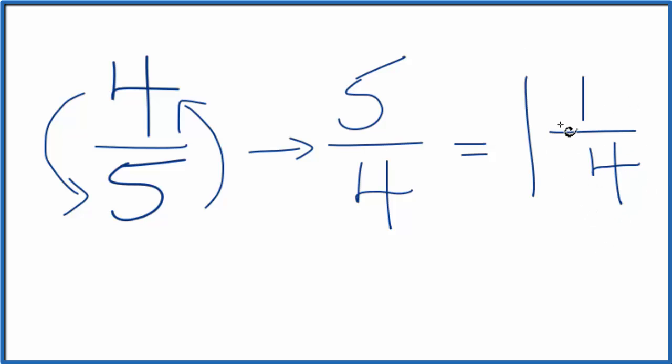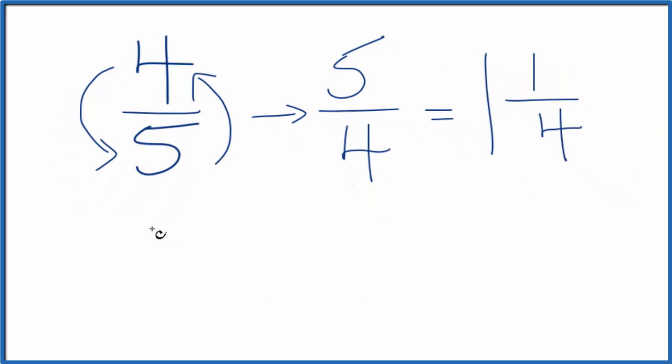Both five-fourths and one and one-fourth are reciprocals for four-fifths. Let's check our work though. We could say we have four-fifths, that's our original fraction, multiply it by its reciprocal. That's five over four. And if we get one, it means we did the first part correctly.